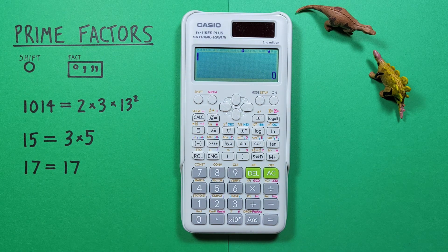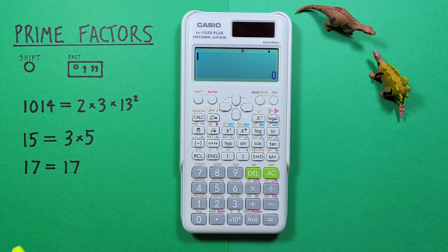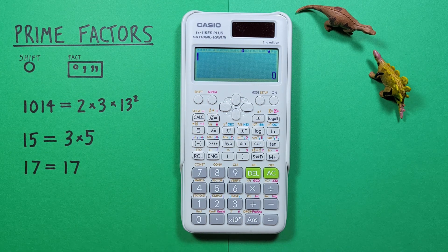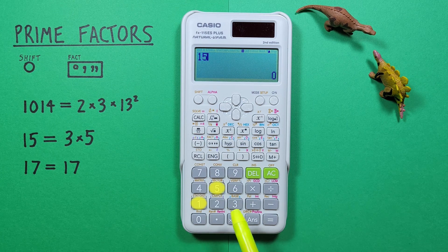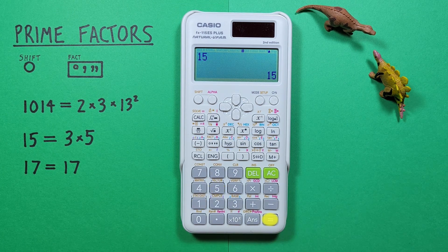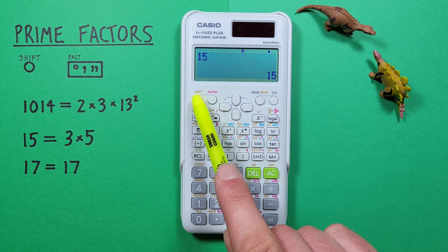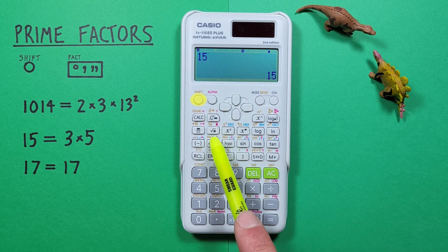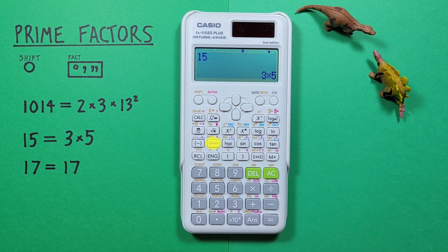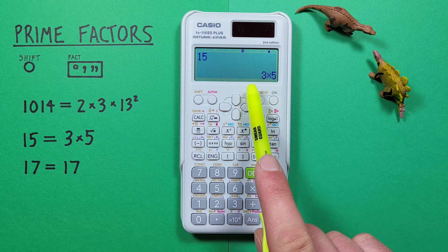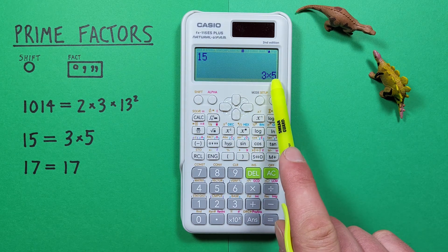Another example, what if we wanted to find the prime factors of 15. Again, we enter the number on our calculator and press equals, and then press shift and then the degree minute seconds key. And we see the prime factors of 15 are 3 times 5.